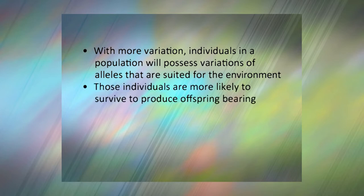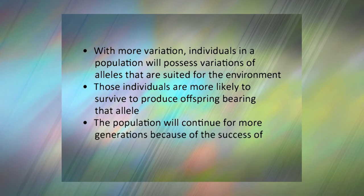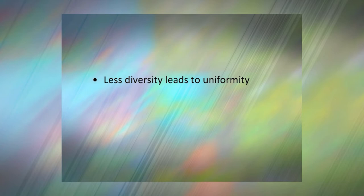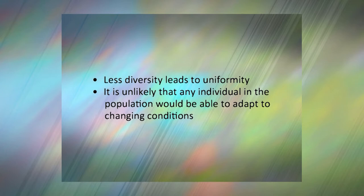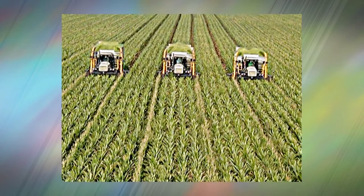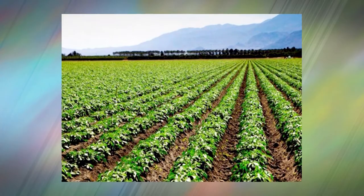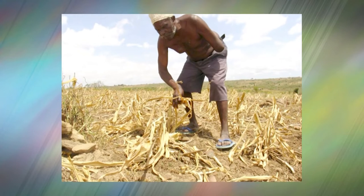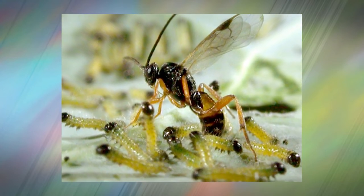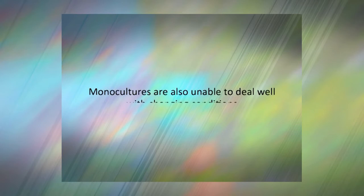Those individuals are more likely to survive to produce offspring bearing that allele, and the population will continue for more generations because of the success of these individuals. Less diversity leads to uniformity, which is a problem in the long term as it is unlikely that any individual in the population would be able to adapt to changing conditions. For example, modern agricultural practices use monocultures, which are large cultures of genetically identical plants. This is an advantage when it comes to growing and harvesting crops, but can be a problem when a disease or parasite attacks the field, as every plant in the field will be susceptible. Monocultures are also unable to deal well with changing conditions.